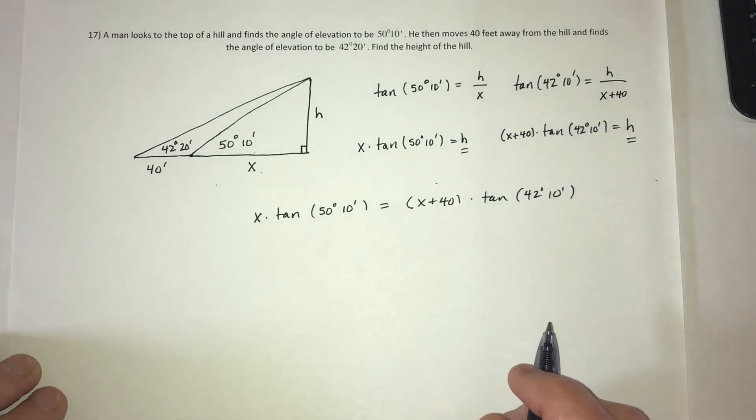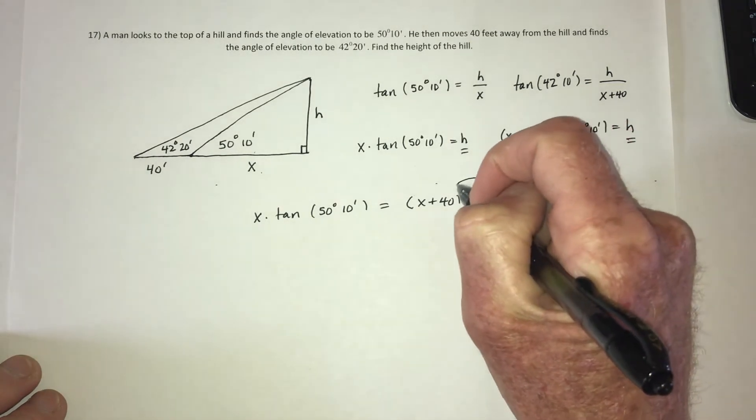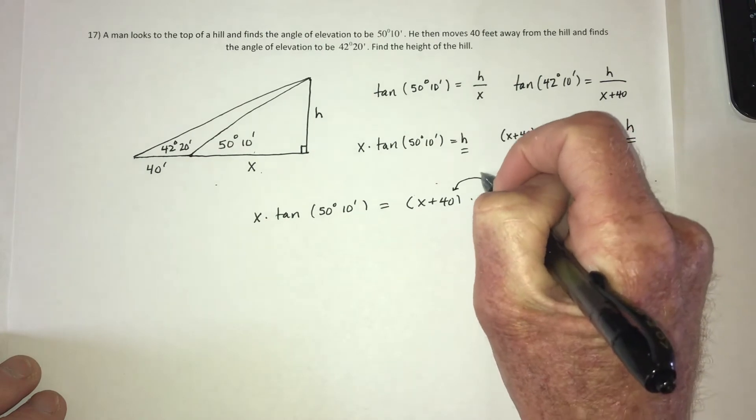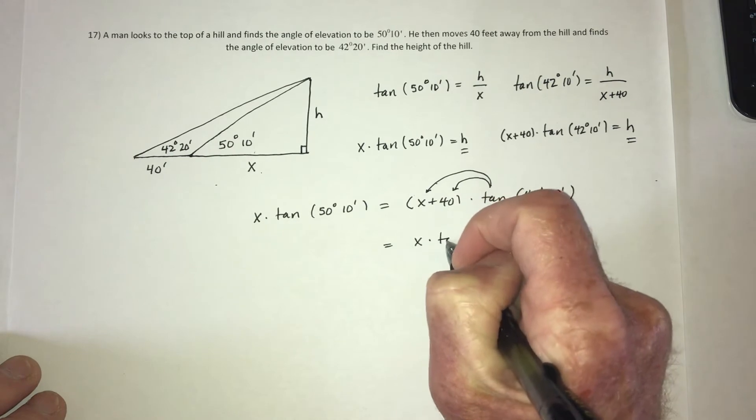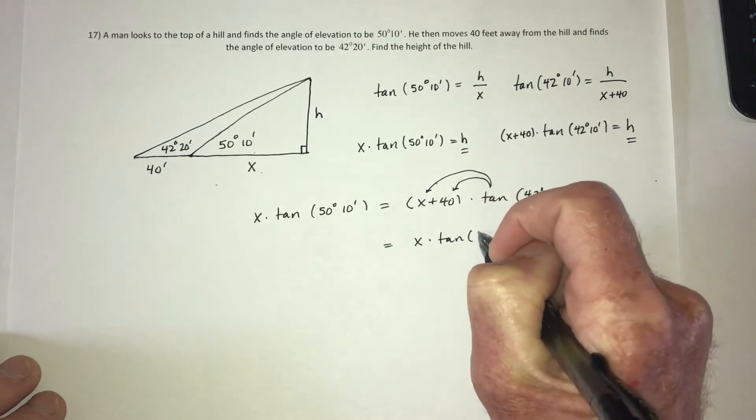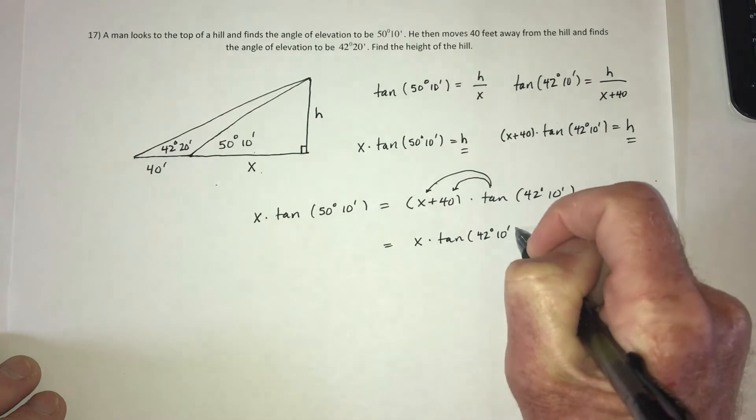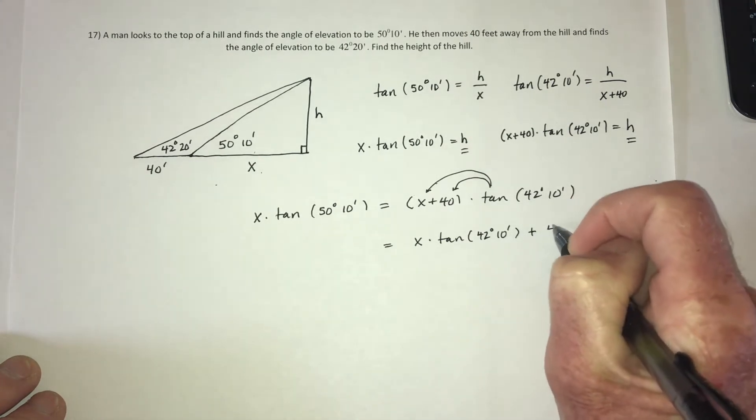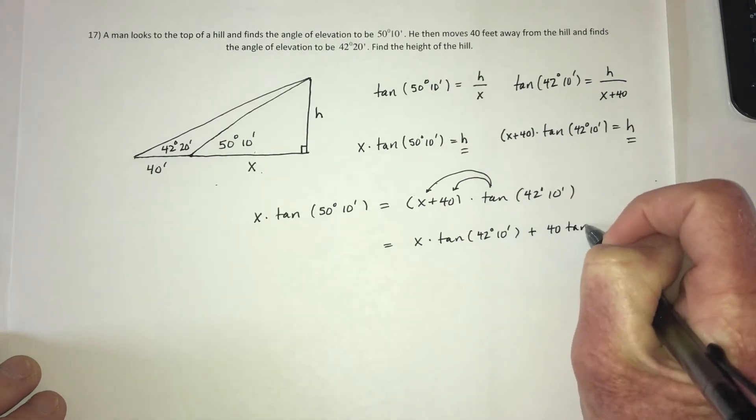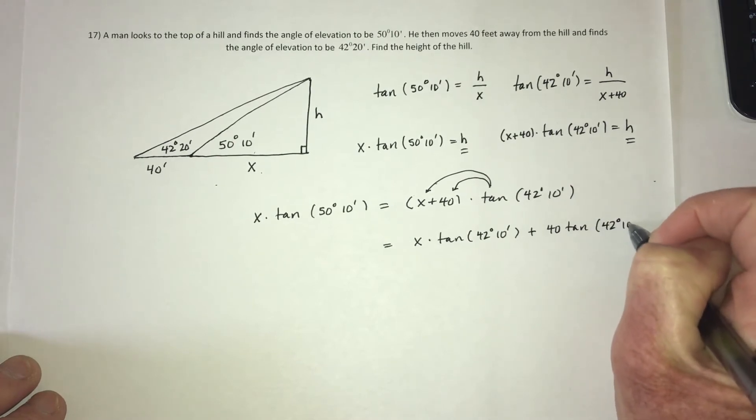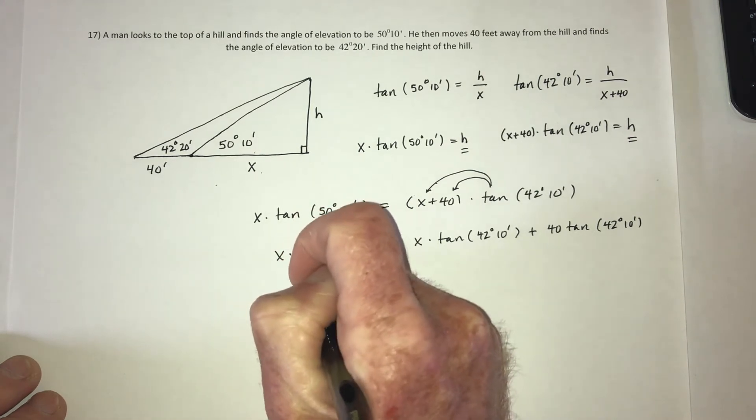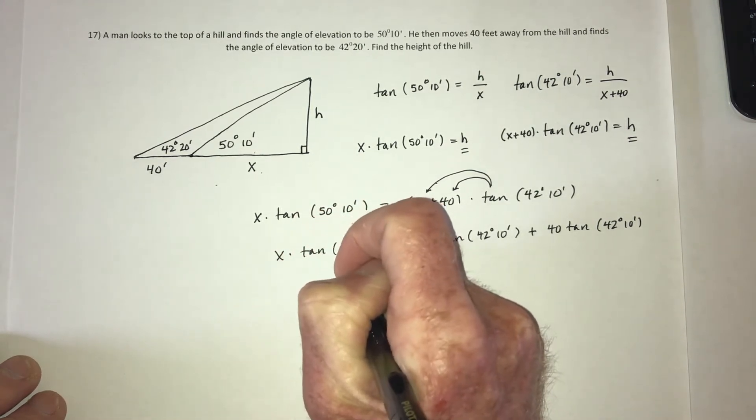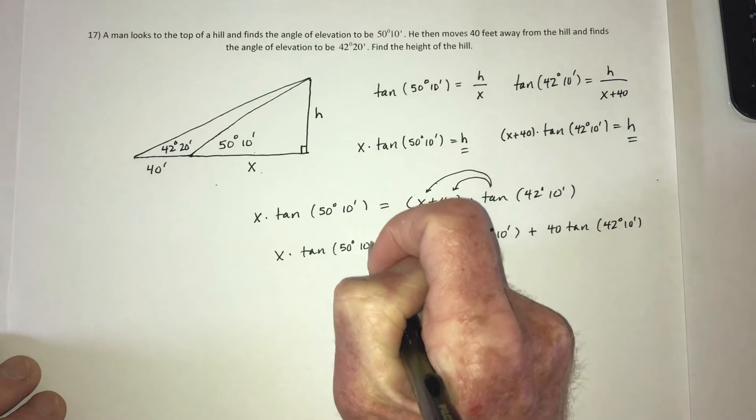Now we need to get the x's on the same side. So in order to do that, I need to go ahead and distribute this tangent. So the right side would have x times tangent of 42, 10 plus 40 times that same tangent, 42, 10. And for the left side, just recopy it for now.